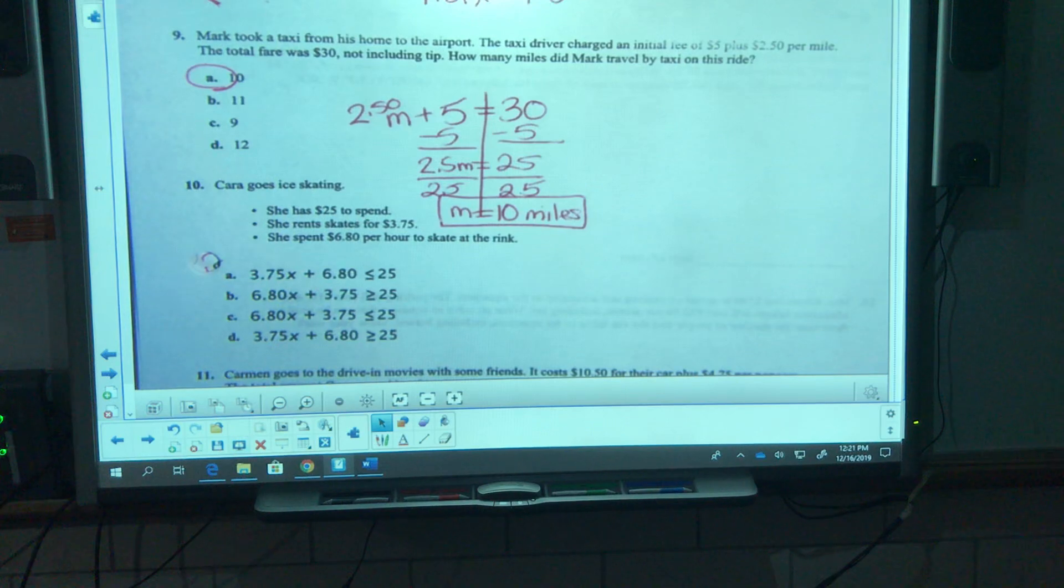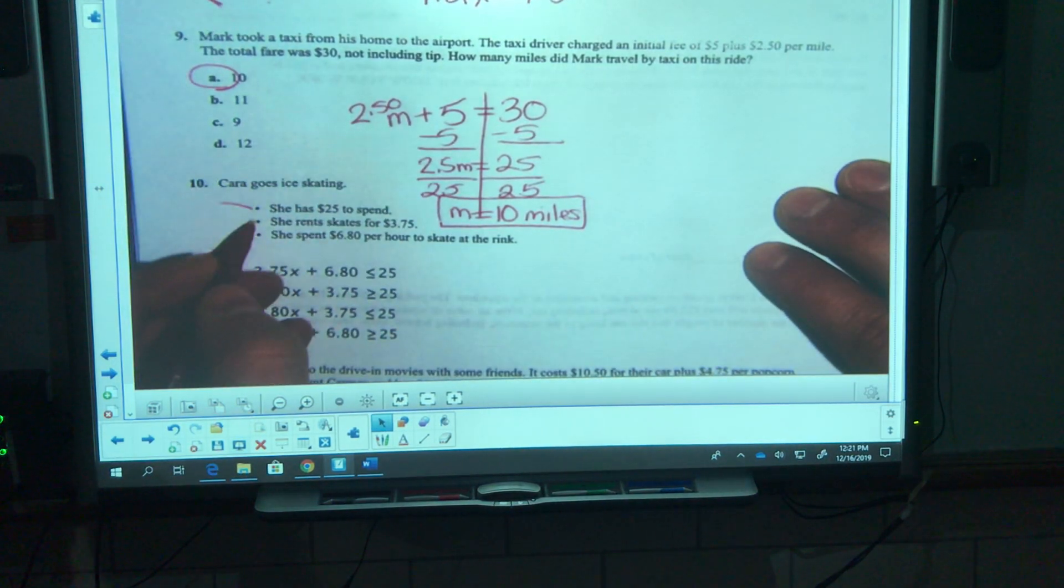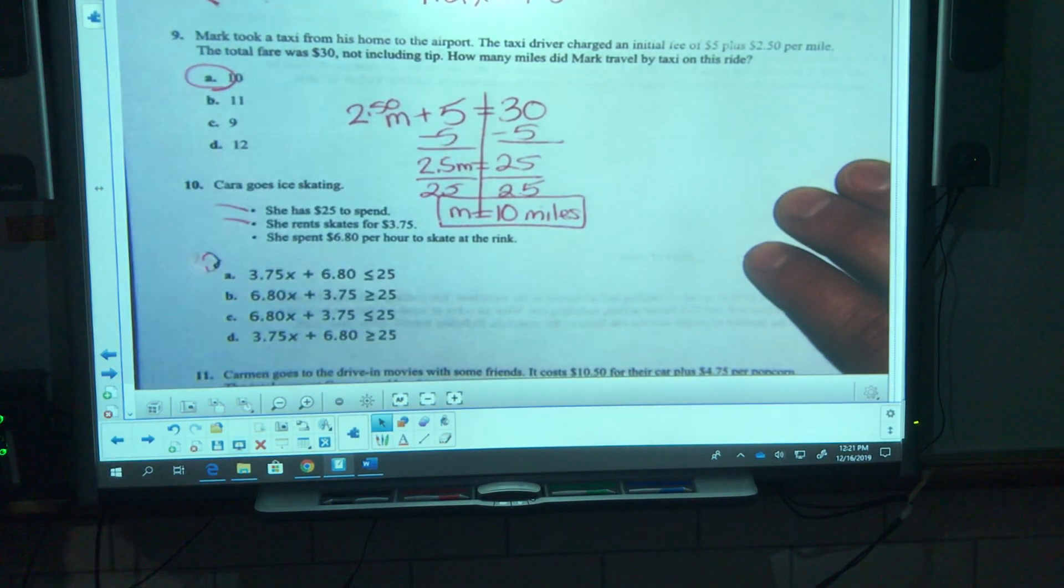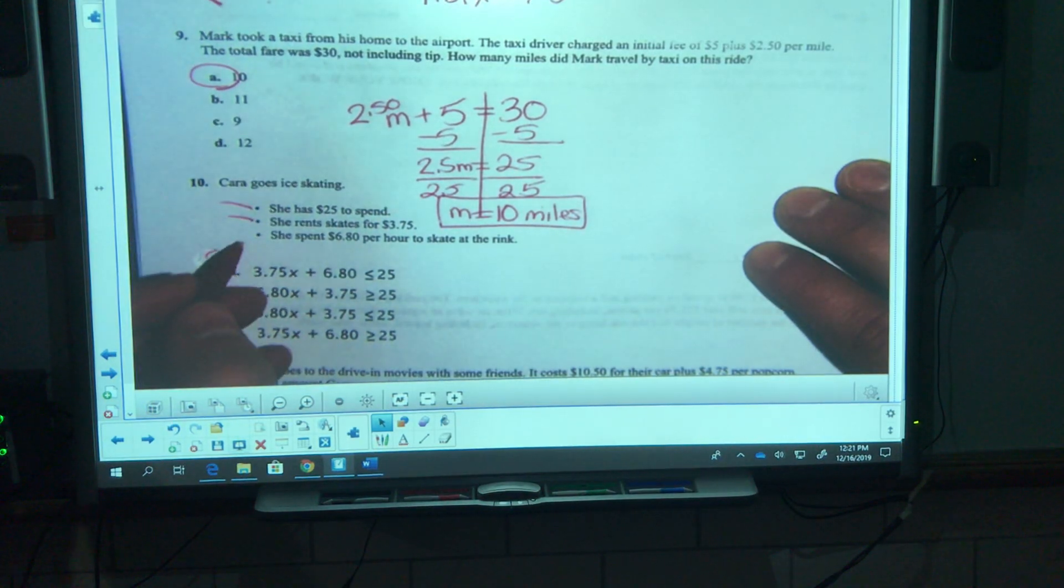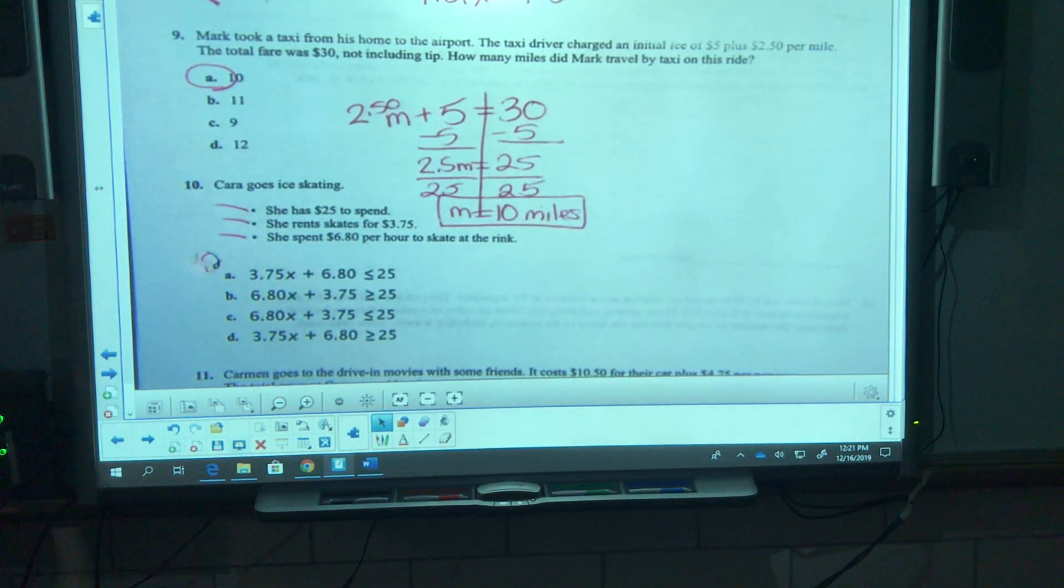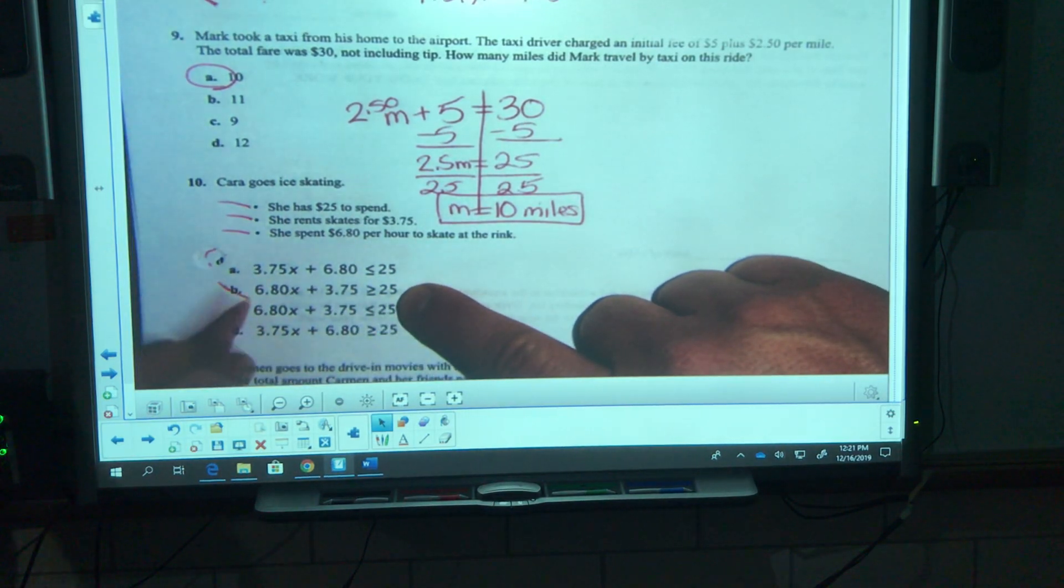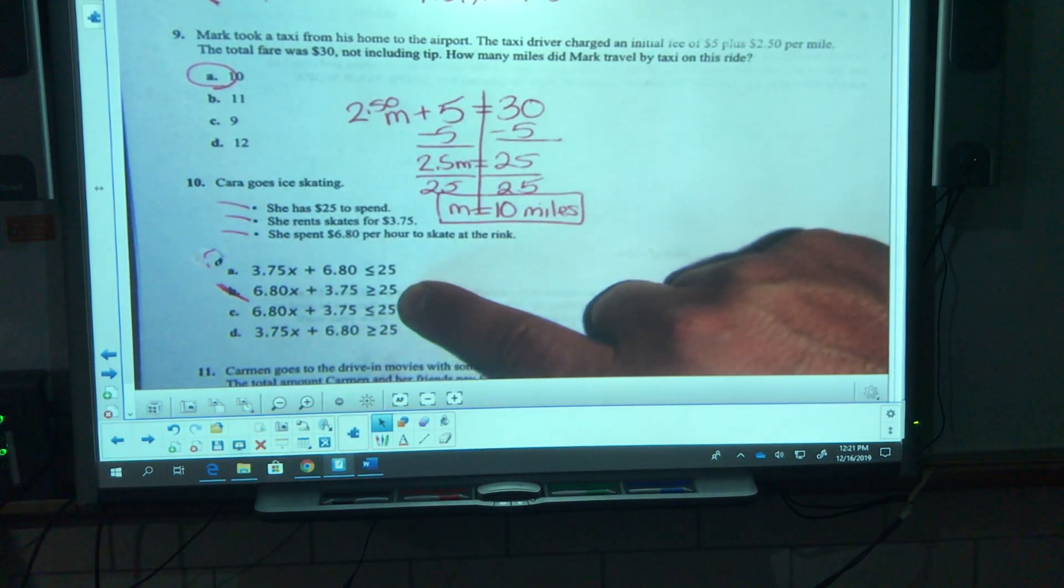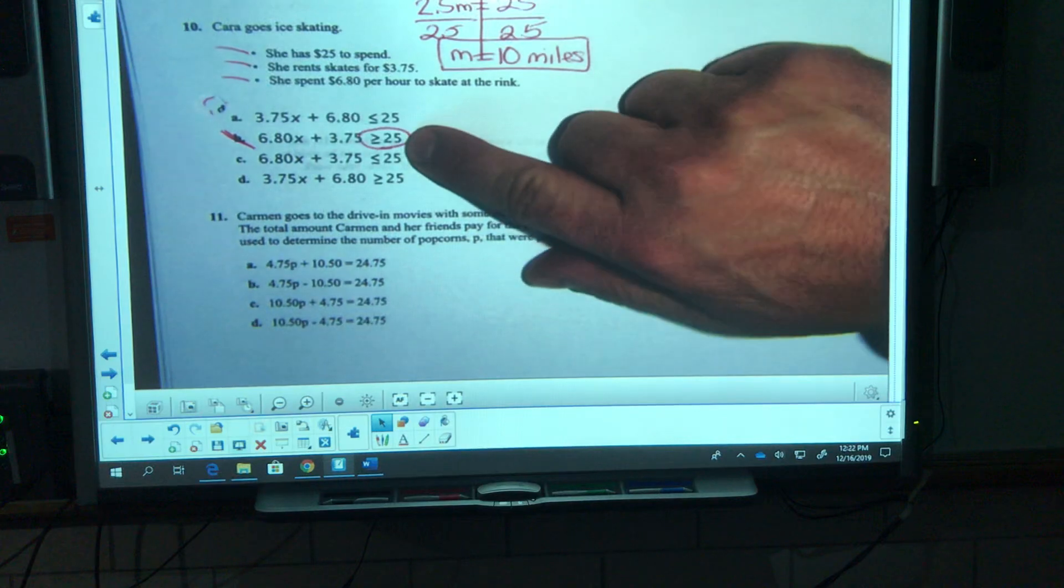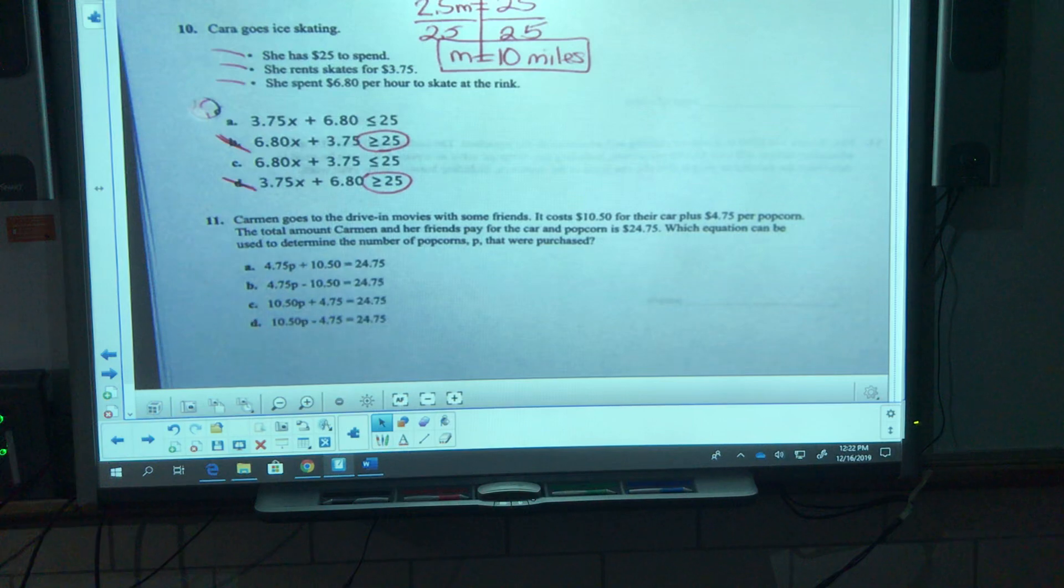Number ten, Cara goes ice skating, 25 to spend, rent skates for 3.75 and spent 6.80 per hour to skate at the rink. Now I know if she has 25 to spend, she cannot go over 25 dollars. So I can't have it be b, right, over 25. This is over 25 dollars, so it can't be either of those.